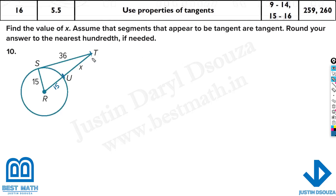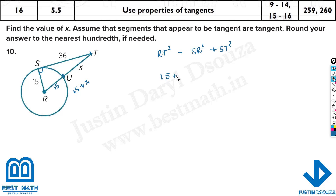Now we can solve. ST is the tangent at 90 degrees, so the hypotenuse is RT. We write: RT squared equals SR squared plus ST squared. RT here is 15 plus x, so substituting: 15 plus x, the whole squared, equals 15 squared plus 36 squared.